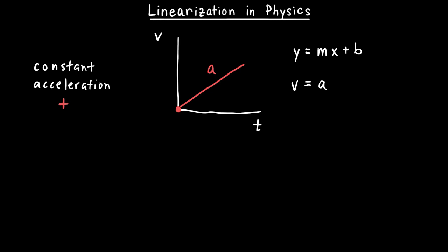x represents what we plot on the horizontal axis, which is t. And lastly, plus b represents the y-intercept. In our case the object started with an initial velocity of zero, so we write plus zero. If instead the object had some initial velocity v-naught, then the right-hand side would have plus v-naught instead of plus zero.